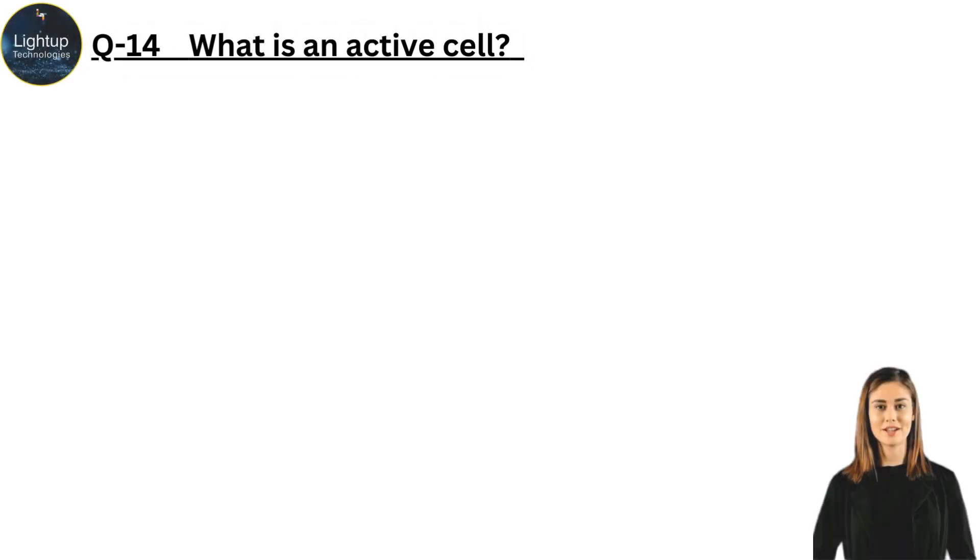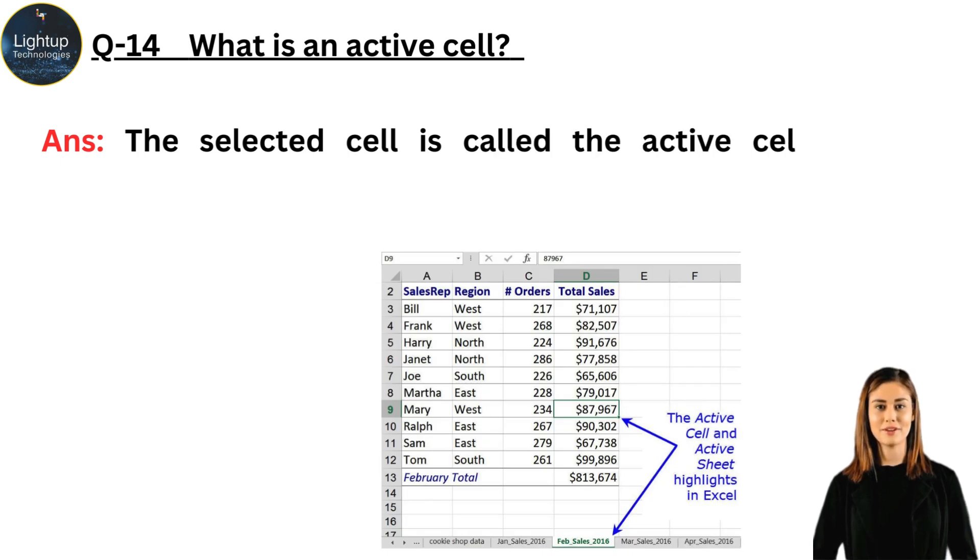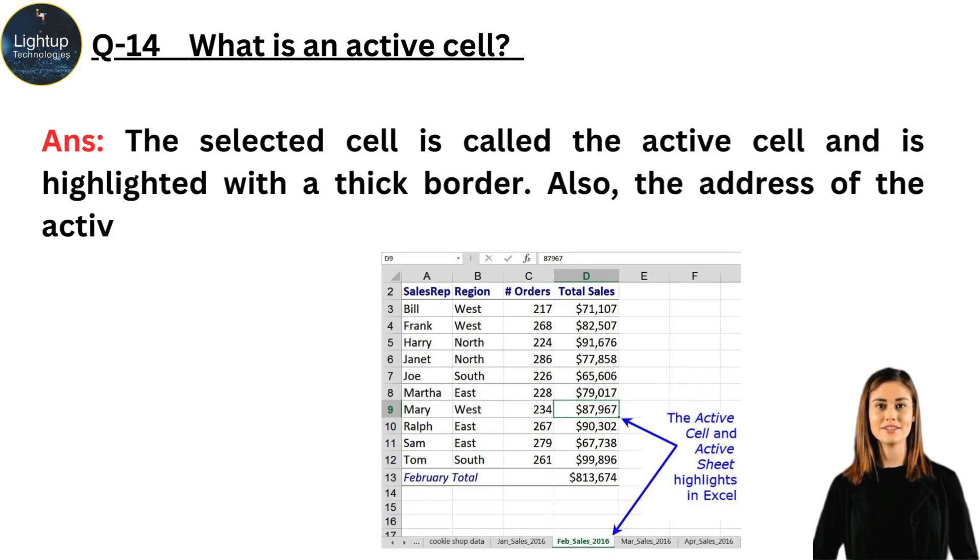What is an active cell? The selected cell is called the active cell and is highlighted with a thick border. Also, the address of the active cell is displayed in the name box.